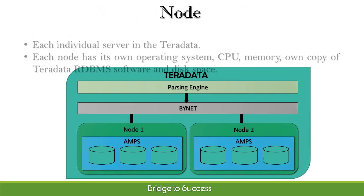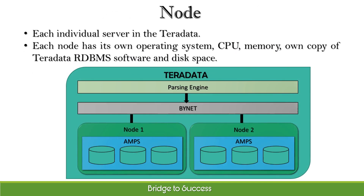Teradata offers a set of virtual disks for each AMP, and the storage area of each AMP is called a virtual disk or vdisk. Each individual server in Teradata is referred to as a node. Each node has its own operating system, CPU, memory, its own copy of Teradata RDBMS software, and disk space. In the figure, we have a two-node Teradata system.